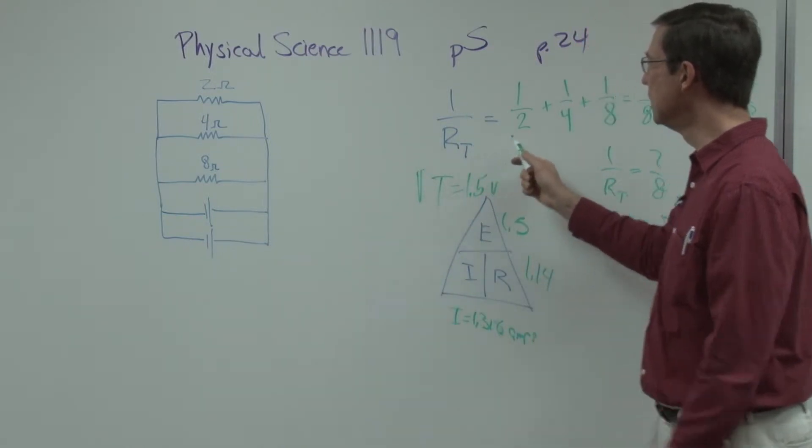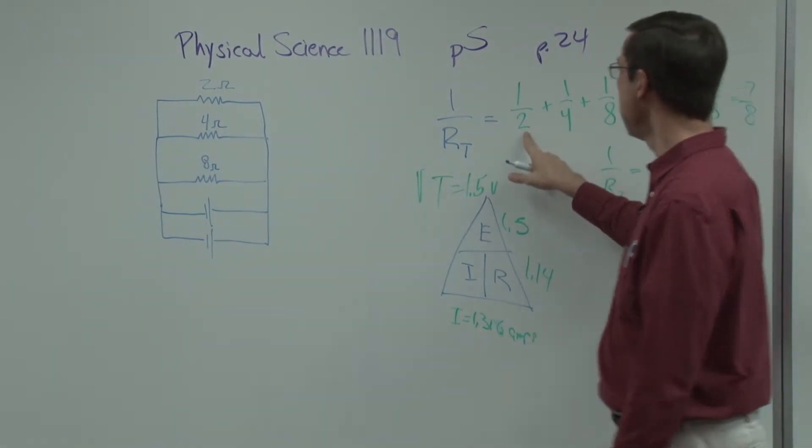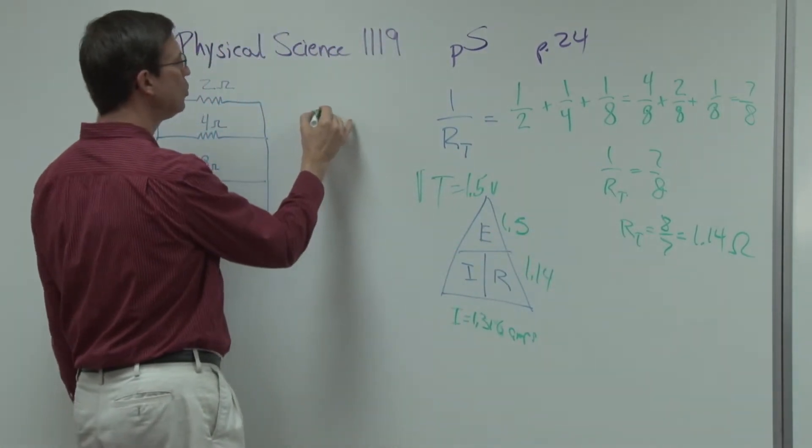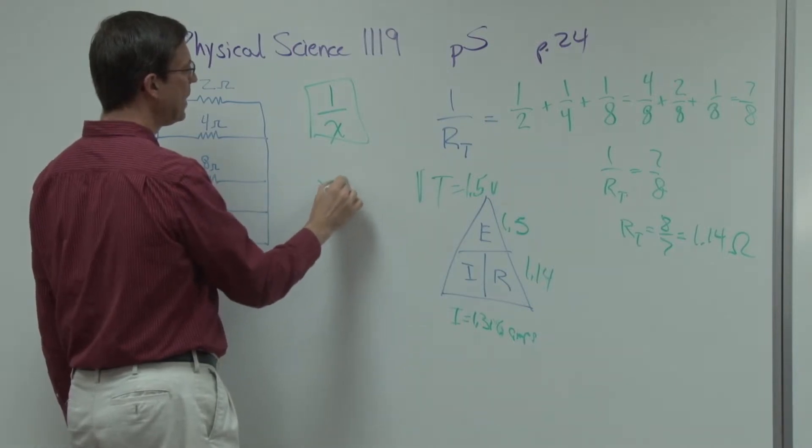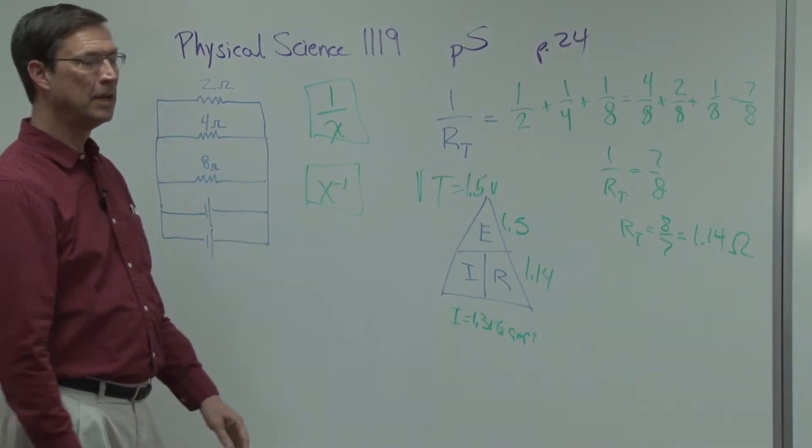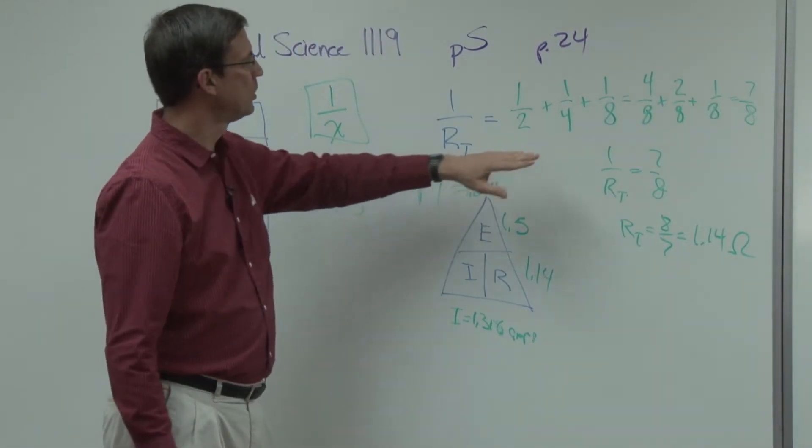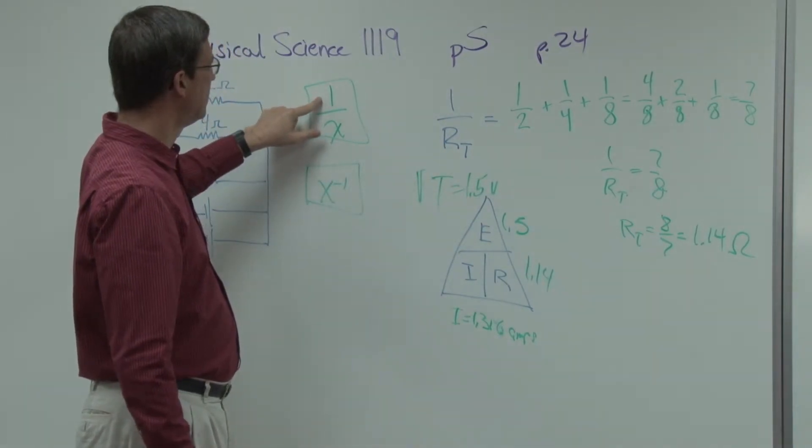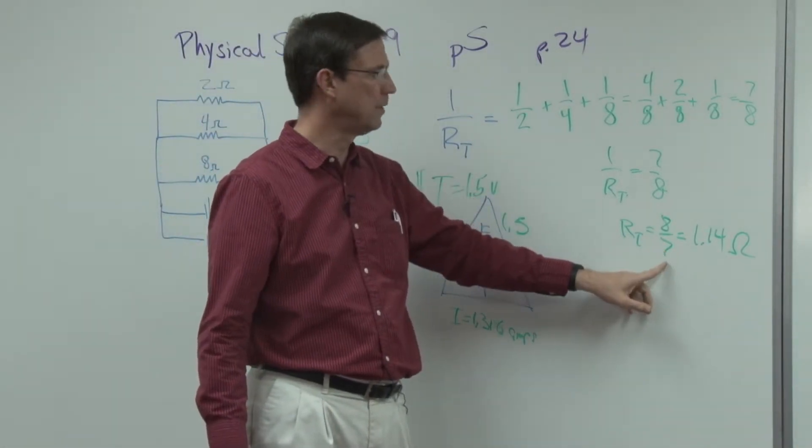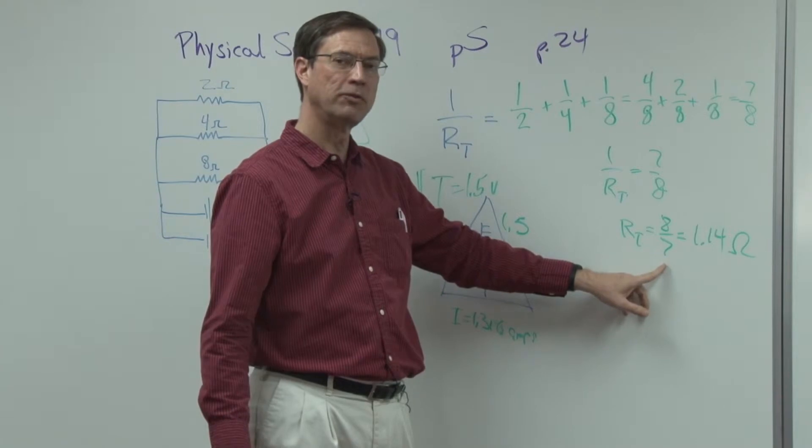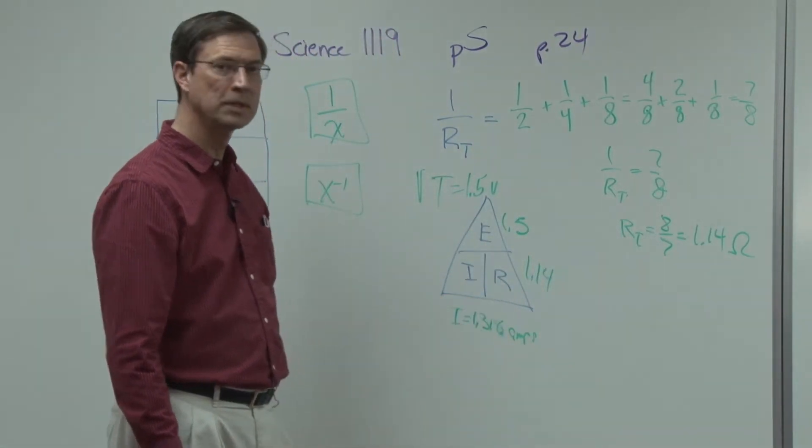So again, the total resistance is we add these up. And if you have a calculator that does fractions, you can try that, add these fractions together. And then you should be able to find a key that looks like one over x, or it might say x to the negative one power. And there's a little magic trick for you. If you take the seven eighths, which is the answer that you'll get when you add those, and then you hit this key or this key, whatever your calculator has, it should give you the 1.14, or it might give you the eight over seven. And then you can convert the fraction into a decimal. And the decimal is what we'll want to plug in for the total resistance.